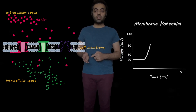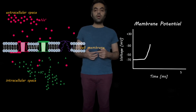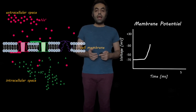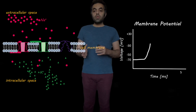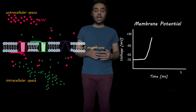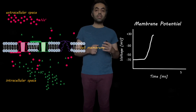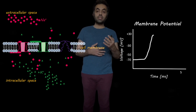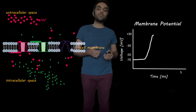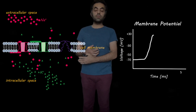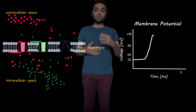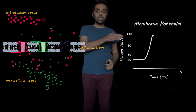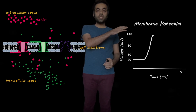At this point, the potassium channels, which are voltage-gated channels as well, open. And due to this, both the sodium channels and potassium channels are open. There is the flow of potassium ions from the intracellular space to the extracellular space, and the flow of sodium ions from the extracellular space to the intracellular space. Due to these transactions, the membrane potential reaches somewhere around plus 30 millivolts.